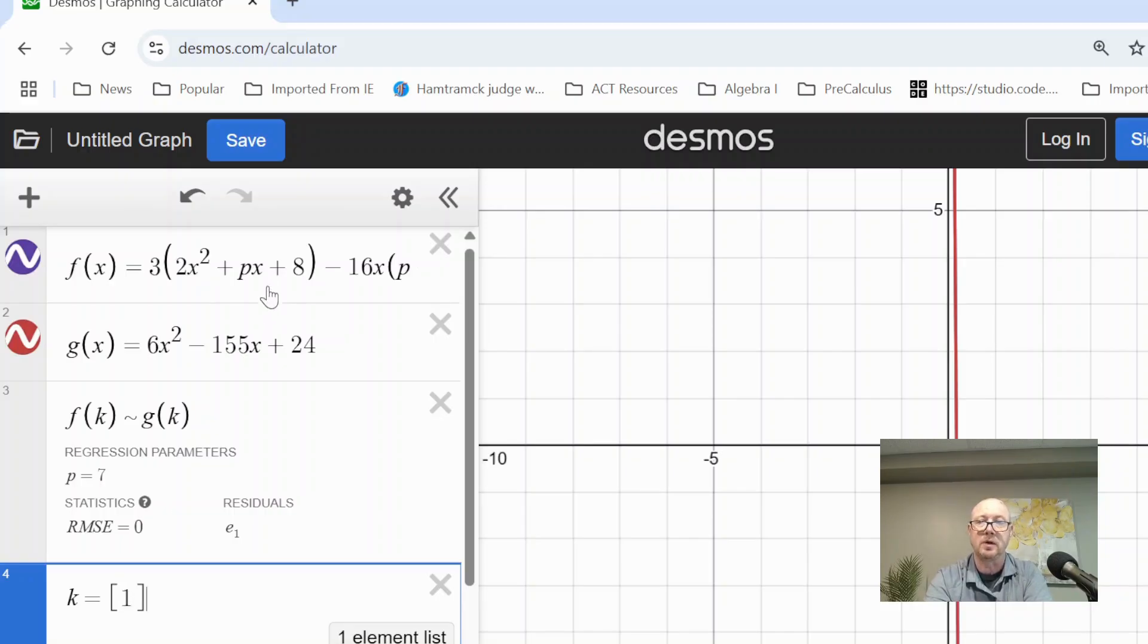You just have to be careful. The value you put into the set has to make the function defined. For example, you can't put in a value where you maybe would divide by 0 in one of the functions.